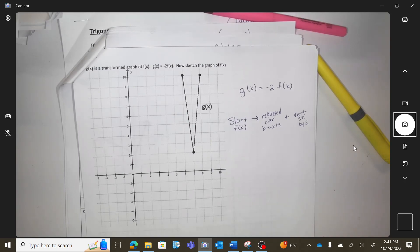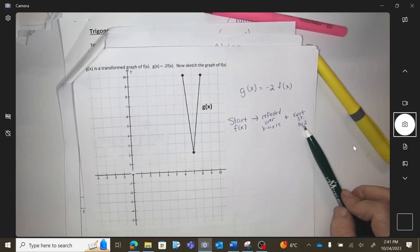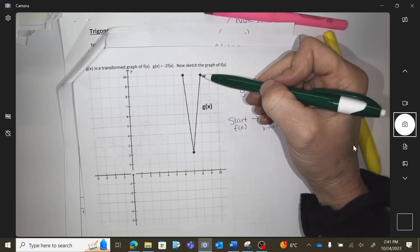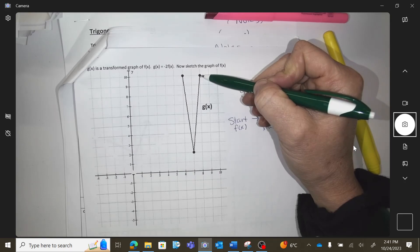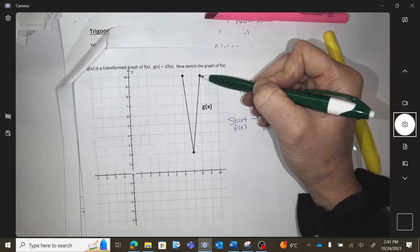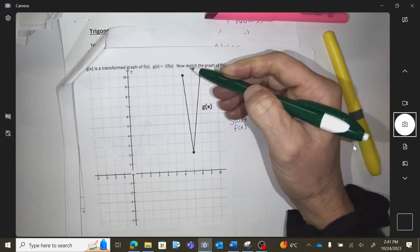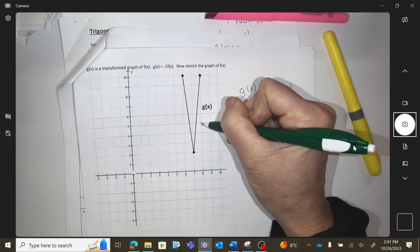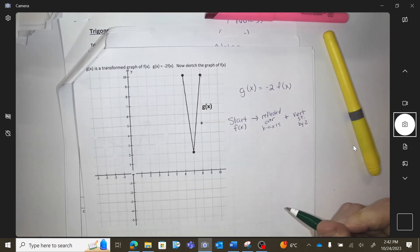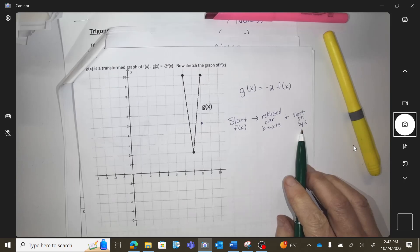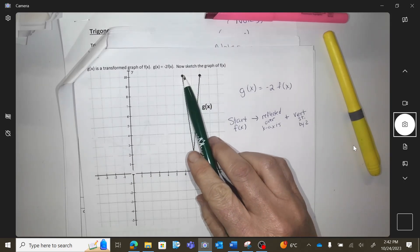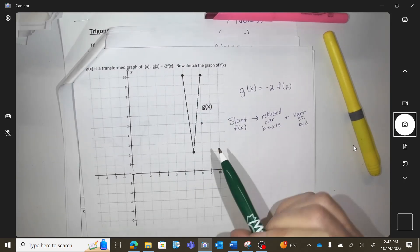Okay, how do you undo a vertical stretch? Compress it by two. So look at this point right here, what's the height? Ten. What's the new height, the original height going to be? Five. We're undoing the stretch. So if this height was ten, then it would have been at a five. If this height was two, what did it start with? One.